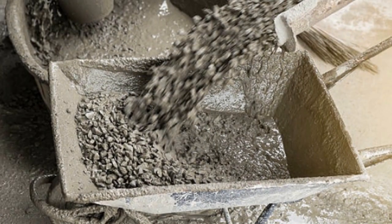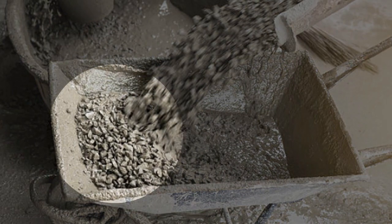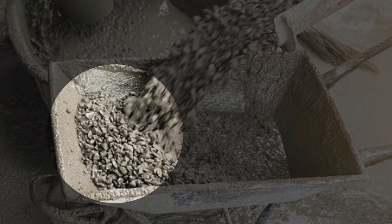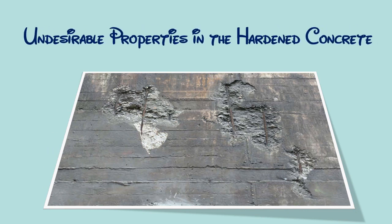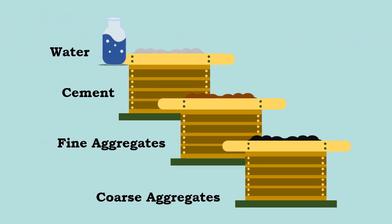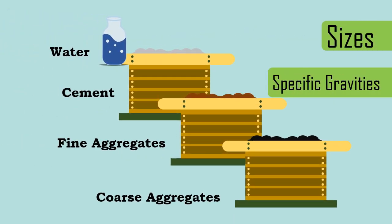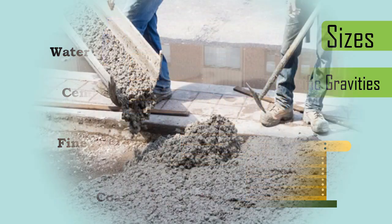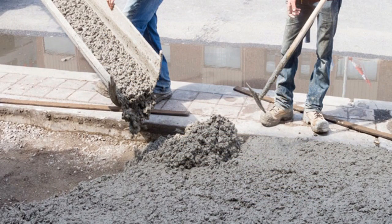Generally, the coarse aggregate gets separated from the other mixture. The segregation of concrete induces all undesirable properties in the hardened concrete. As the ingredients of concrete vary in sizes and specific gravities, it tends to fall apart.